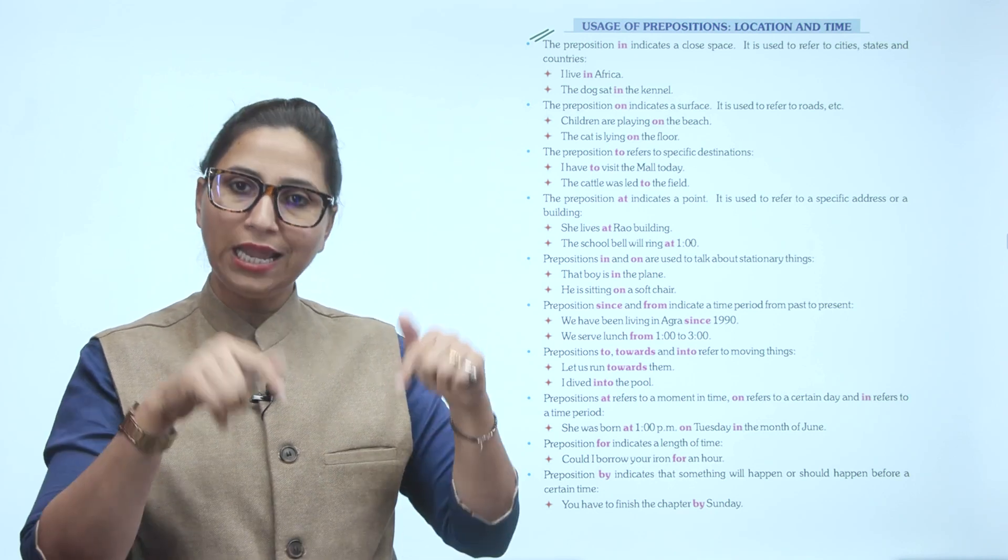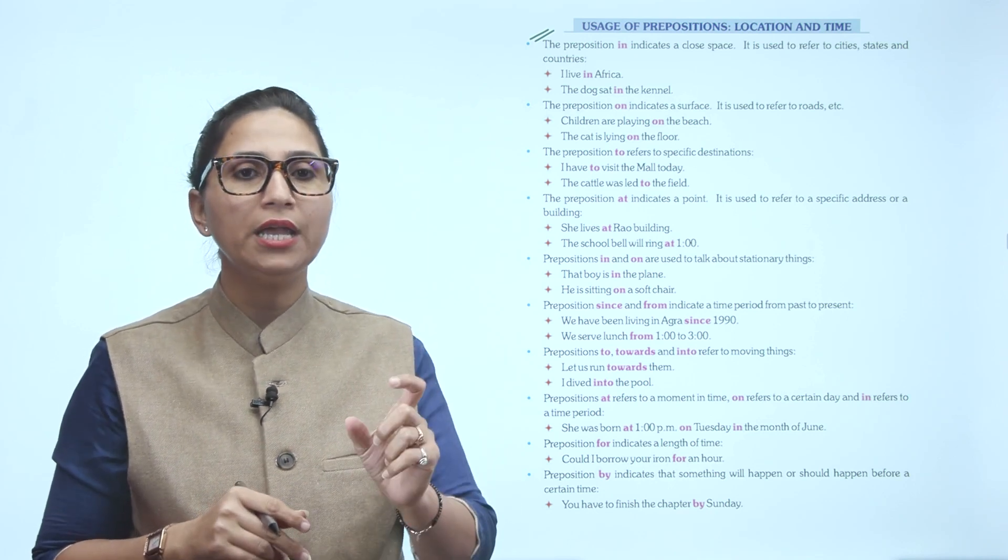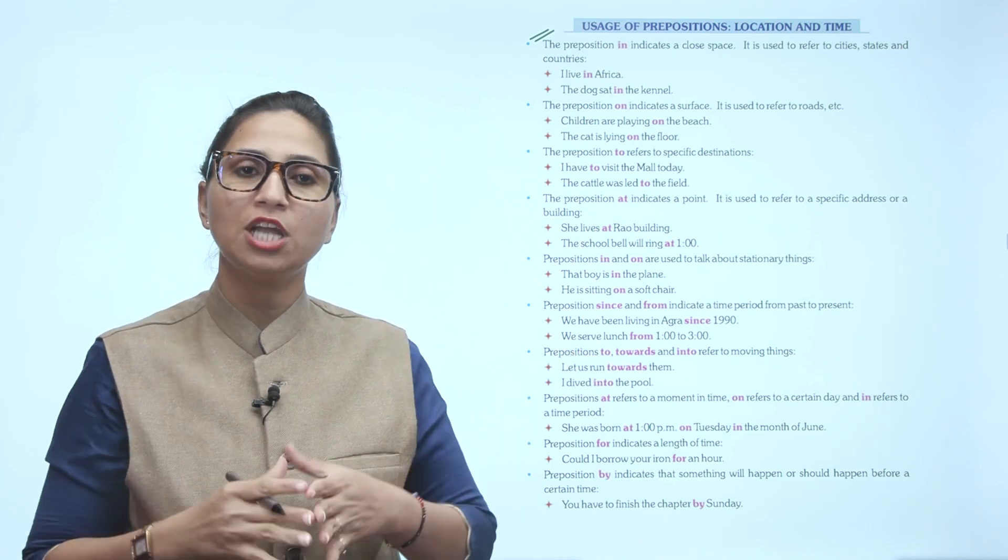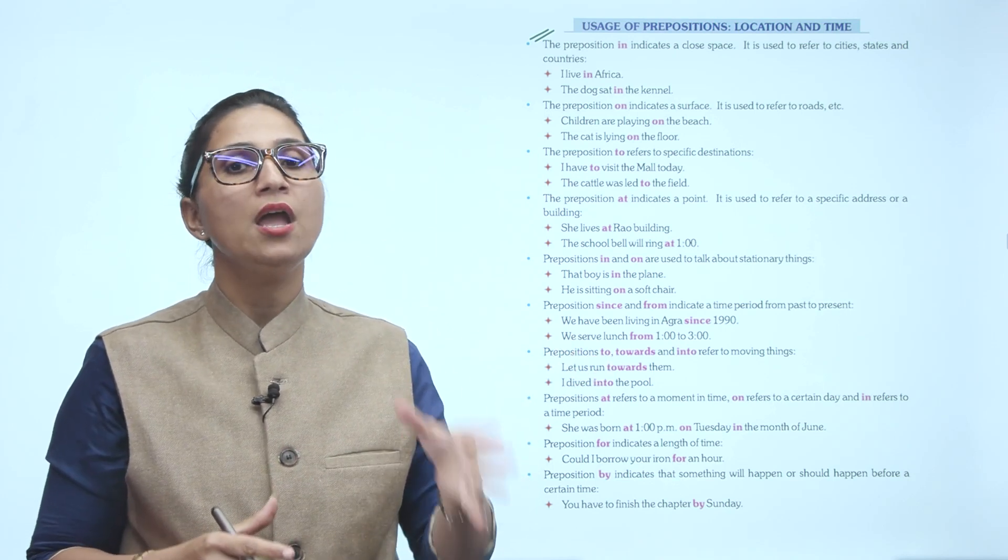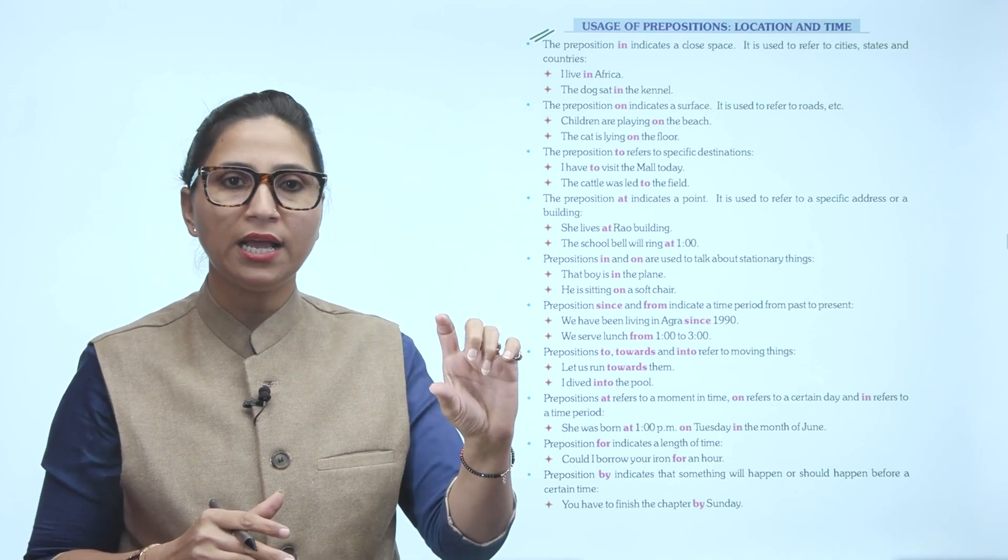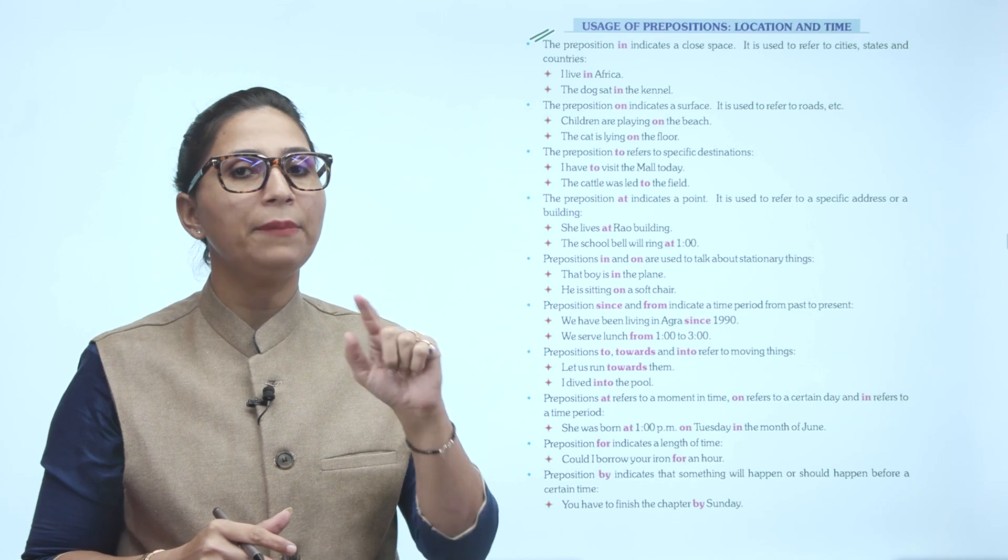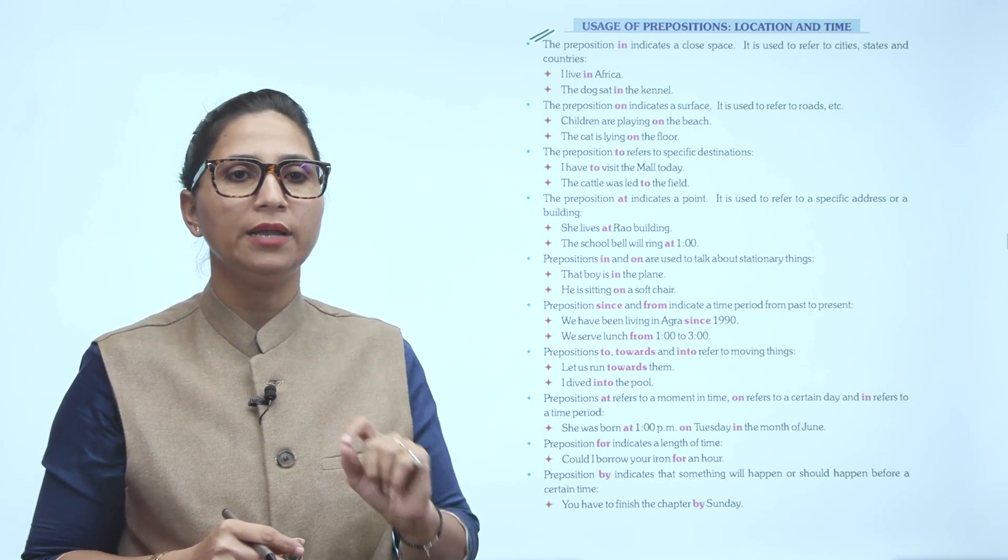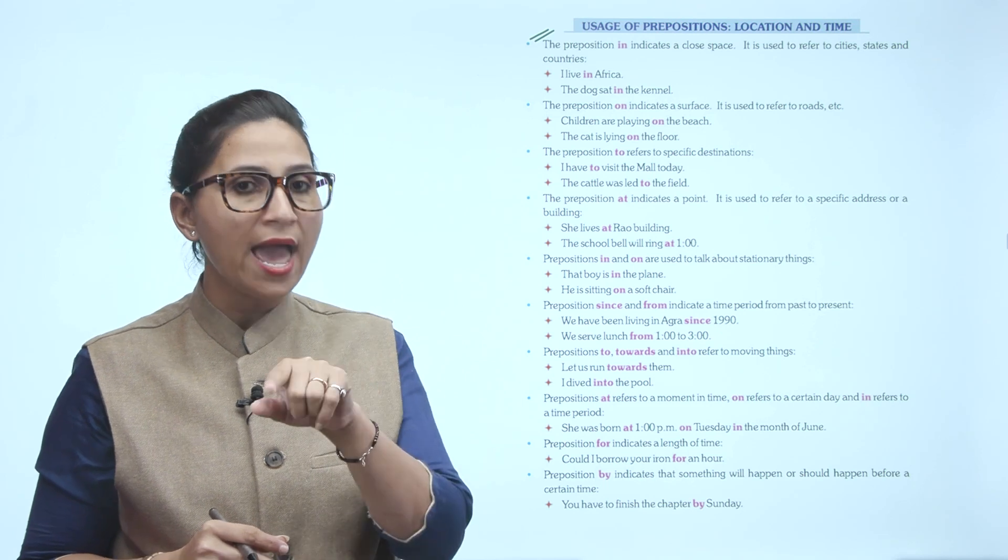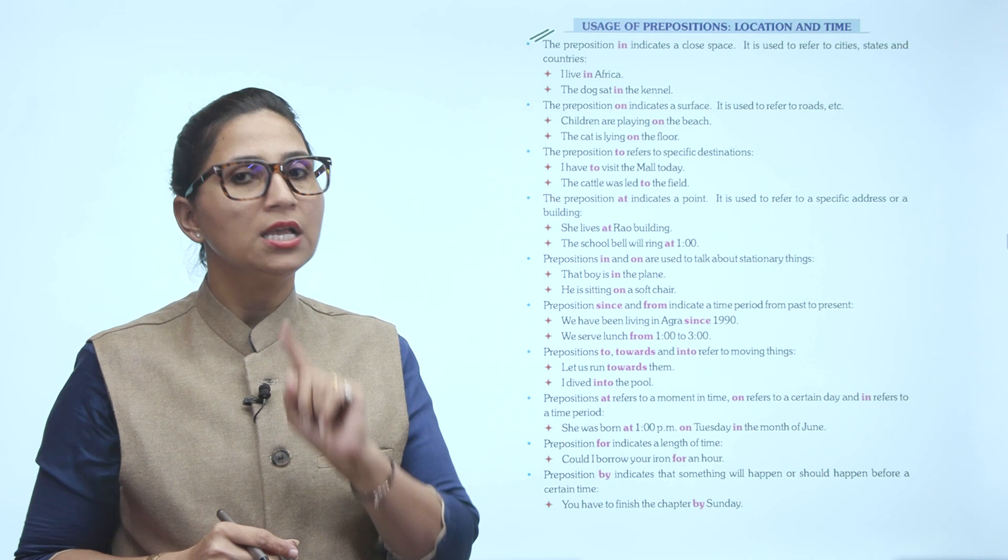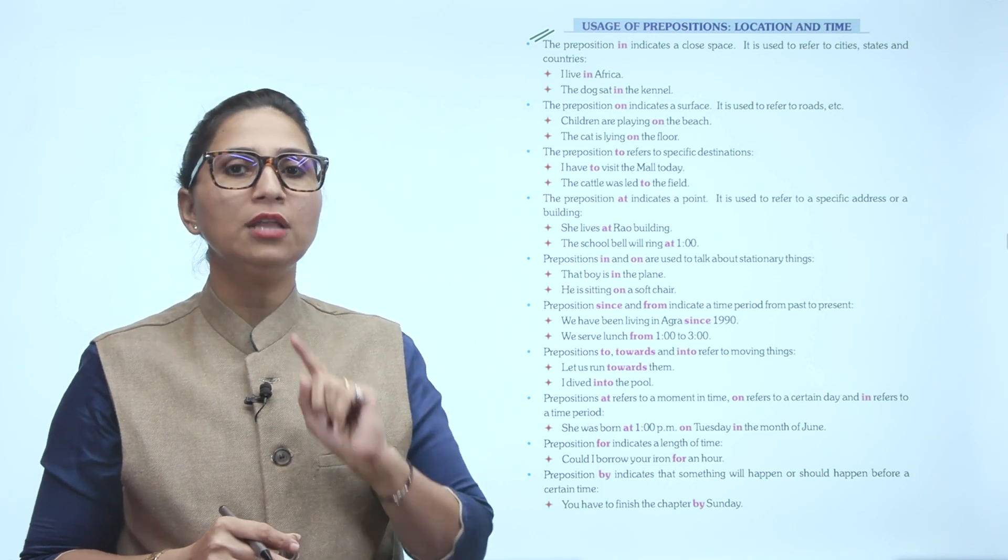Preposition AT refers to a moment in time. ON refers to a certain day and IN refers to a time period. So in a single sentence we can use three prepositions. AT refers to moment in time, ON refers to certain day, and IN refers to time period. She was born at one PM on Tuesday in the month of June - a time period.